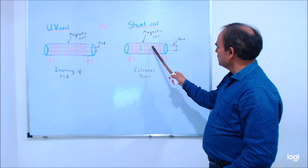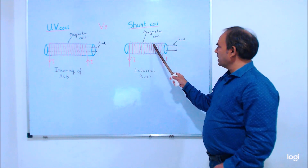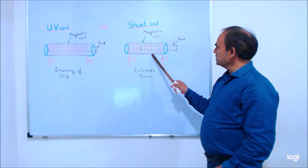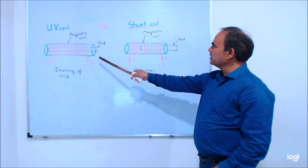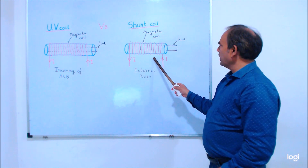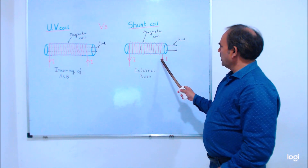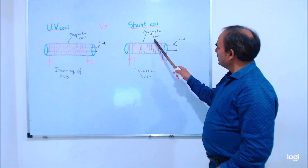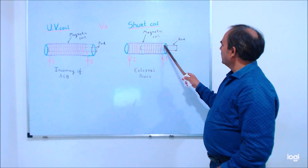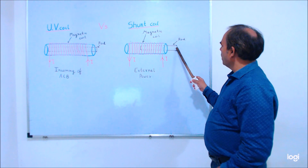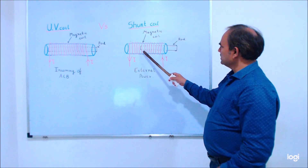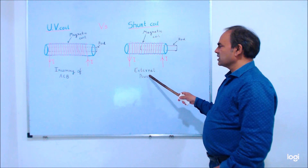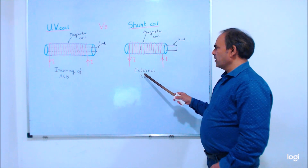Now we will see the shunt coil. This diagram is also similar to the UV coil — the red line represents the magnetic coil, and this is the rod. The shunt coil is always in a de-energized condition because it takes power from an external source.